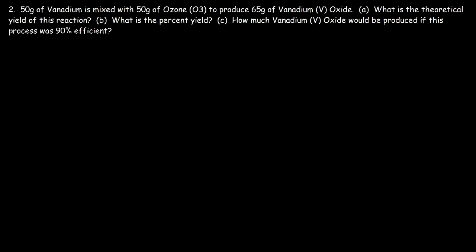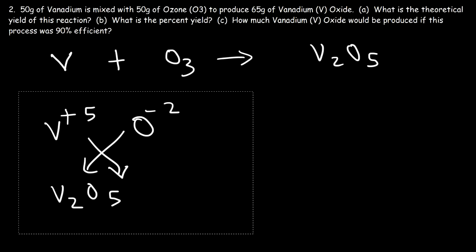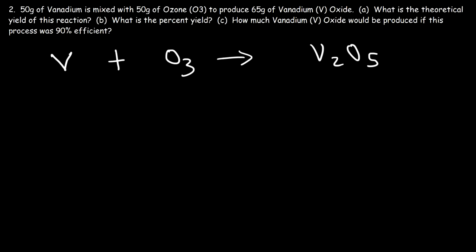Go ahead and try this one — it's a similar problem. 50 grams of vanadium is mixed with 50 grams of ozone to produce 65 grams of vanadium 5 oxide. What is the theoretical yield? Vanadium is V, ozone is O3, and vanadium 5 oxide is V2O5 — the Roman numeral 5 gives vanadium a +5 charge and oxygen has a -2 charge. To balance, the LCM of 3 and 5 is 15, so we put a 5 in front of O3 and a 3 in front of V2O5. Now there are 6 vanadium atoms on the right, so we put a 6 in front of V.